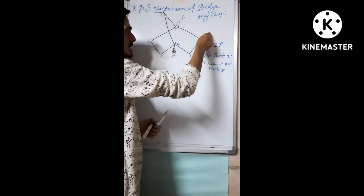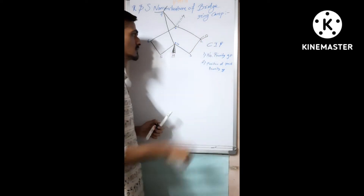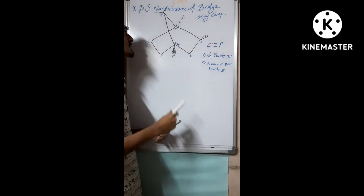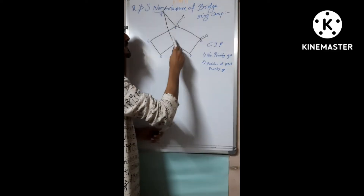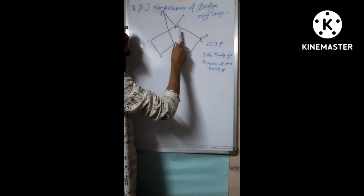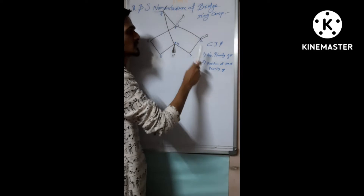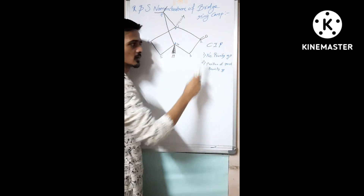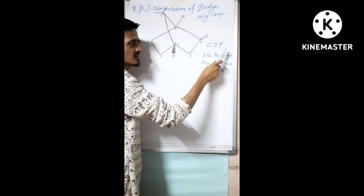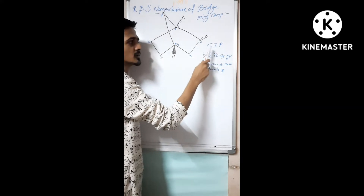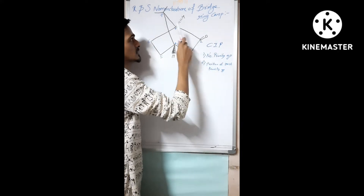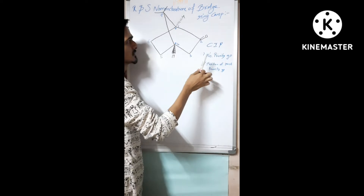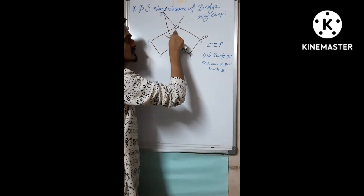For giving the RS configuration, we have to number the priority according to the CIP rule. The CIP rule — the Cahn-Ingold-Prelog rule — says that you have to assign priority to groups based on higher atomic number. So let's consider the chiral carbon center.